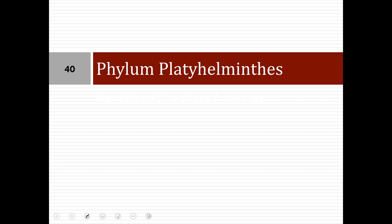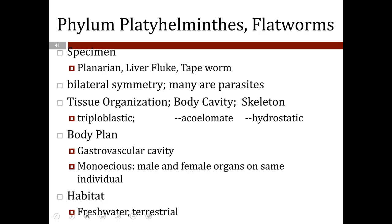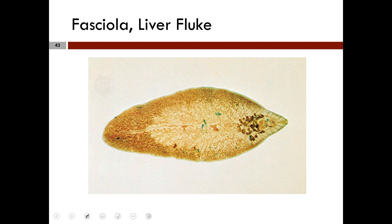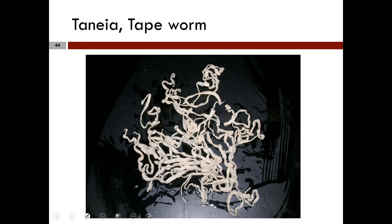Now we get to Phylum Platyhelminthes — the flatworms. Note that 'plat' rhymes with 'flat.' Examples include the liver fluke, planarian, and tapeworm. They exhibit bilateral symmetry and many are parasites. They are triploblastic acoelomates with a hydrostatic skeleton. Their body plan features a gastrovascular cavity. They are monoecious, meaning both male and female organs are on the same animal. They are found in terrestrial environments including fresh water.